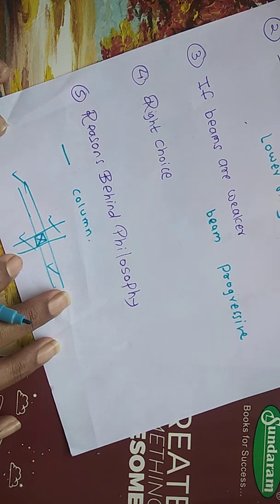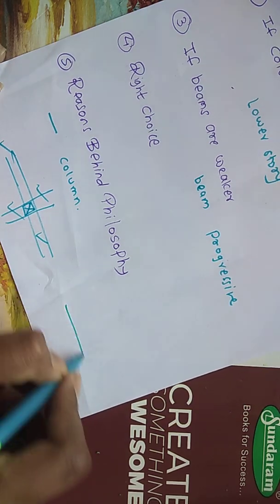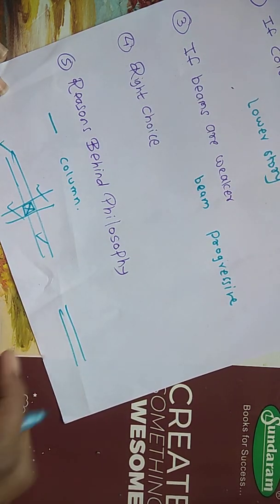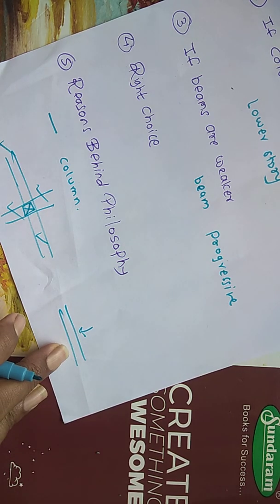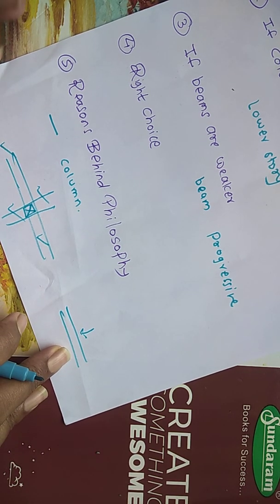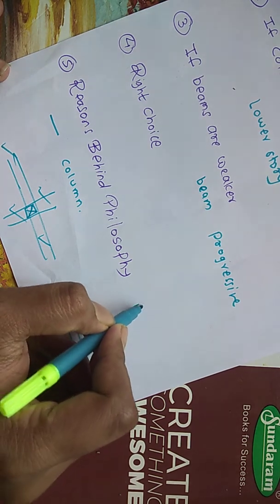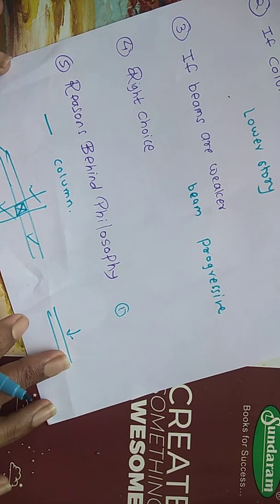That means there is a major collapse. But when the beam fails, only that part of the beam and the slab which is resting on it will fail. The entire building will not fail. This is the first major reason behind the strong column weak beam philosophy.